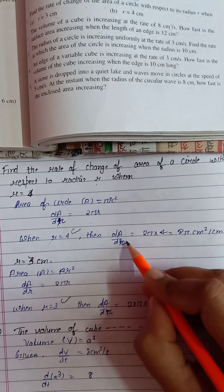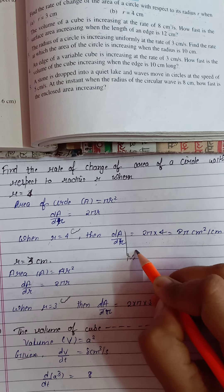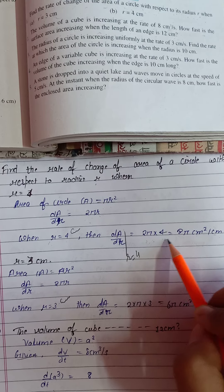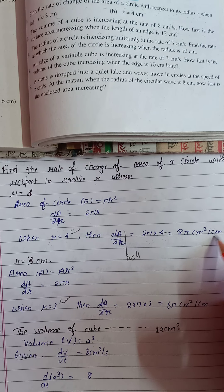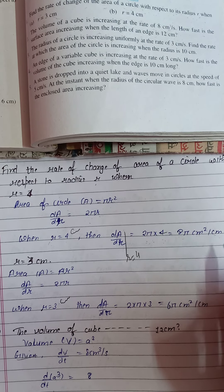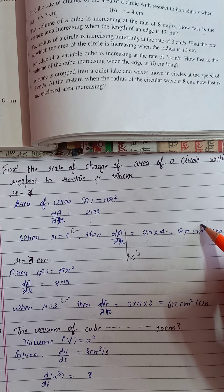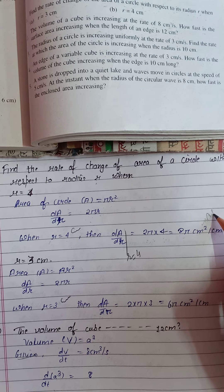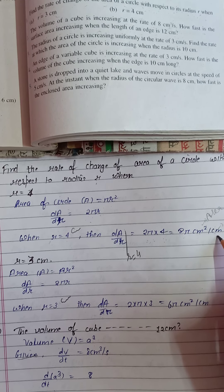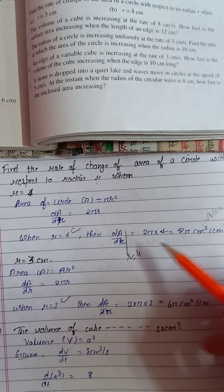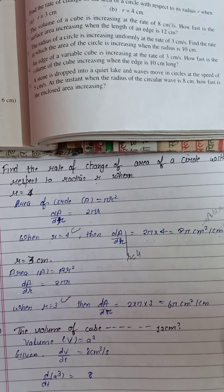It is given r = 3 cm in one case and r = 4 cm in another case. So dA/dr at r = 4: put r = 4, giving 2π × 4 = 8π cm² per cm. The unit is cm² per cm because it is the rate of change of area with respect to radius. Radius unit is cm and area's unit is cm². Similarly, we can put r = 3 cm for the other part.